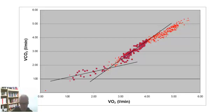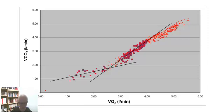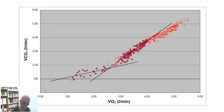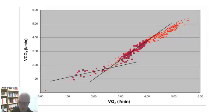Minute ventilation — VE — shows a linear response against VO2. So if you plot VO2 versus VCO2 using breath-by-breath data, as you can see here, there is a sudden kick: a disproportionate production in VCO2 against VO2, marking the ventilatory threshold.